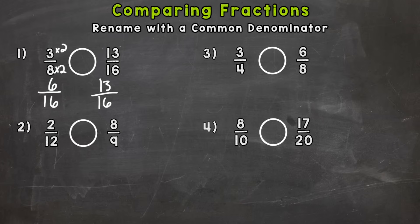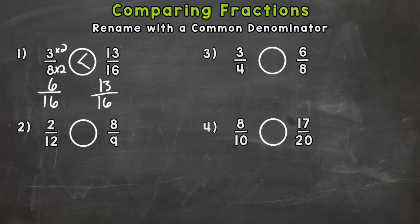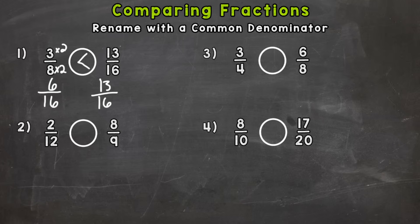Now that we have a common denominator it's very easy to compare. Six sixteenths is less than thirteen sixteenths — 13 out of 16 is greater than 6 out of 16. So three eighths is less than thirteen sixteenths. Another way to think about this: three eighths is less than half because half is four eighths. On the right, thirteen sixteenths is greater than half because half of 16 is eight sixteenths. So the right side is more than half and the left side is less than half — you can use that strategy or prove it with a common denominator.